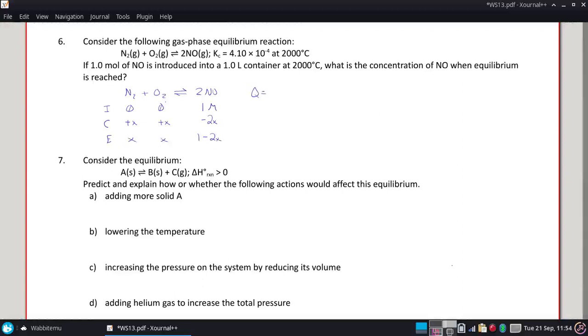And our Q is going to be our NO squared products over N2 and O2 reactants. And for this problem, we can set up our Q and then plug in these equilibrium amounts and solve for X.